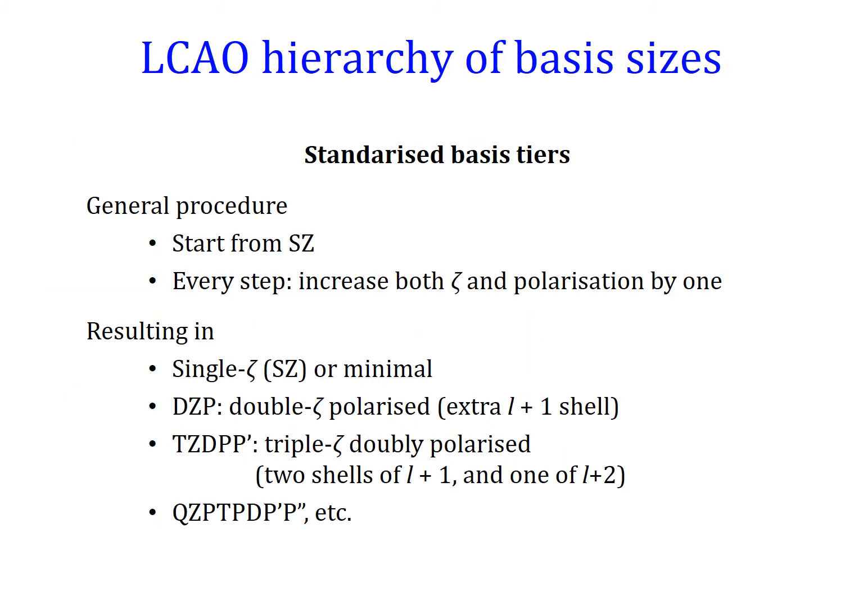These bases are normally grouped in tiers. Starting from the minimal or single-zeta basis, each improvement step increases by one zeta level and one polarization level simultaneously: single-zeta at tier 0, double-zeta polarized at tier 1, triple-zeta doubly polarized at tier 2, and so on.